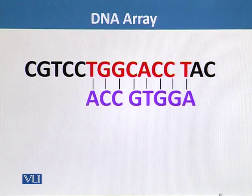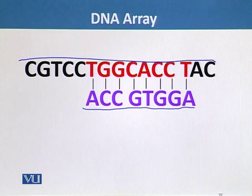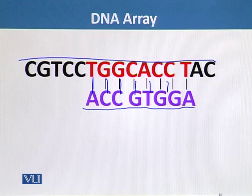For example, consider a probe that has a sequence of A, C, C, G, T, G, G, A. If this probe is attached to the DNA chip, and a DNA fragment that needs to be sequenced is hybridized with this probe, they will form an interaction because the fragment is complementary to that probe. There will be a weak interaction between the probe and the fragment that needs to be sequenced.